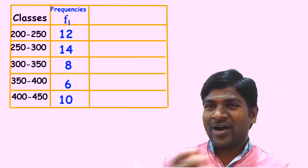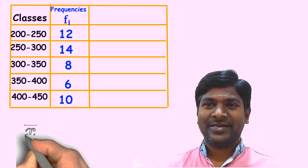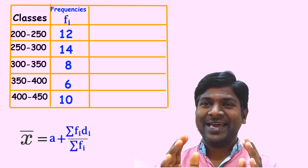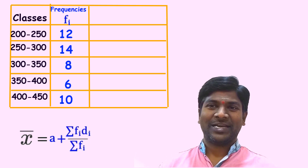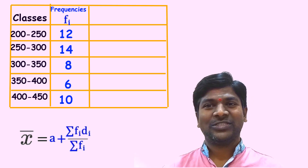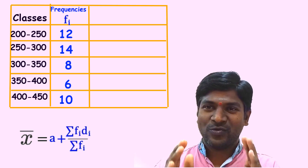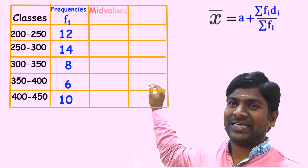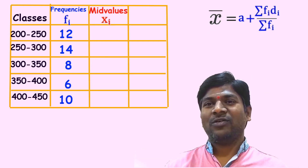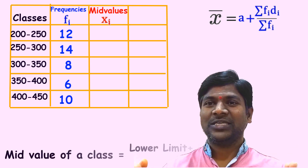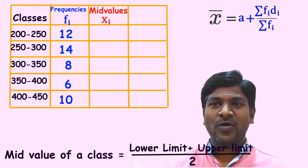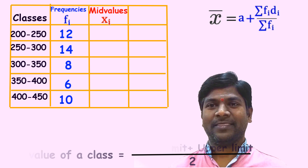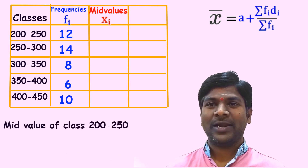We need to find the mean daily wages of 50 workers using the assumed mean method. The formula is x̄ = a + (Σf_i d_i) / Σf_i. Since assumed mean is one of the mid values of the classes, we set up a third column for mid values x_i. The mid value of a class is calculated as (lower limit + upper limit) / 2. For the first class 200–250, the mid value is (200 + 250) / 2 = 225.